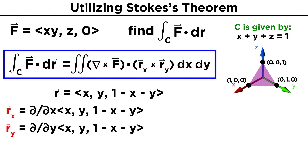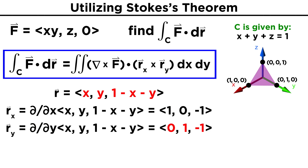To get R_x and R_y, we must take the X and Y derivatives of the R vector. So R_x equals (1, 0, -1), and R_y equals (0, 1, -1).